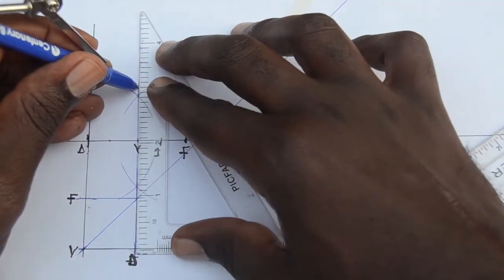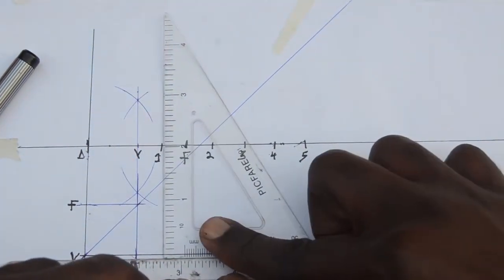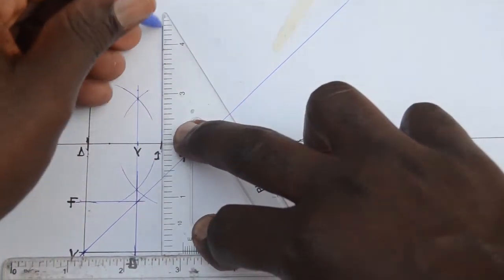We are now going to draw lines at the points we marked off. These lines are going to be parallel to the directrix.